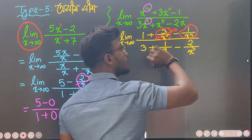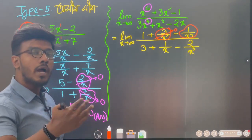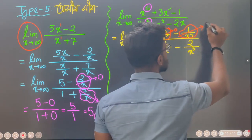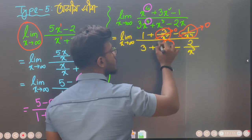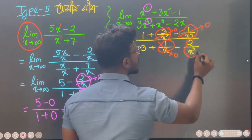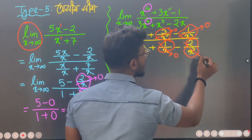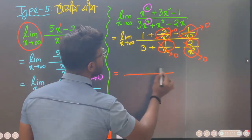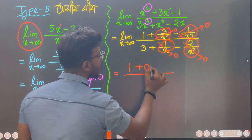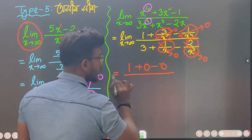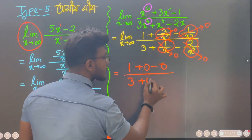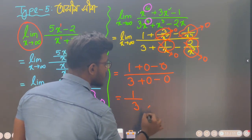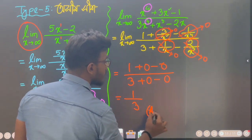Infinity to the power 4 means infinity. 1 by infinity means 0. Similarly, a term tau is 0, and another term tau is 0. So the limit is 1 plus 0 minus 0 over 3 plus 0 minus 0. That means the answer is 5.